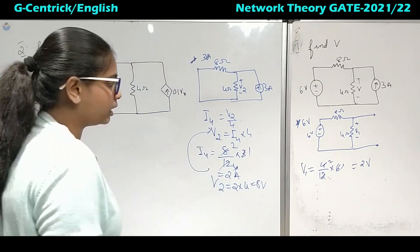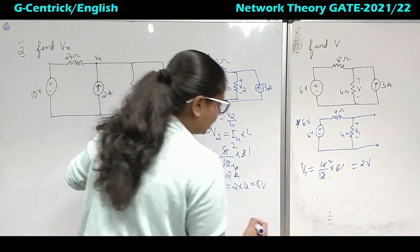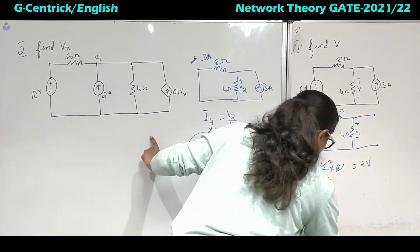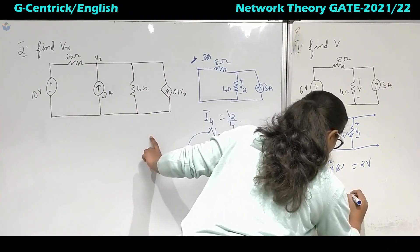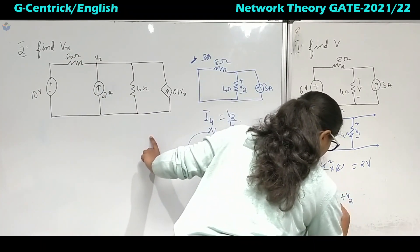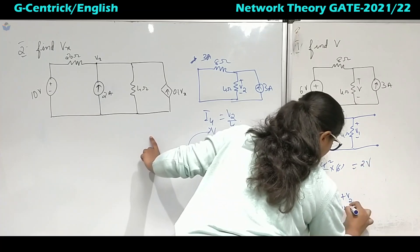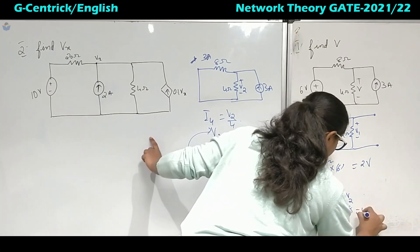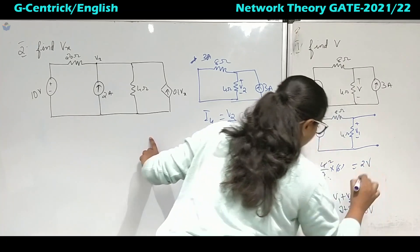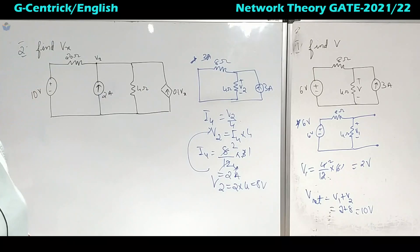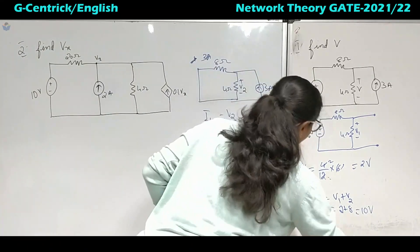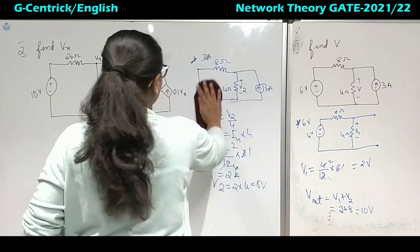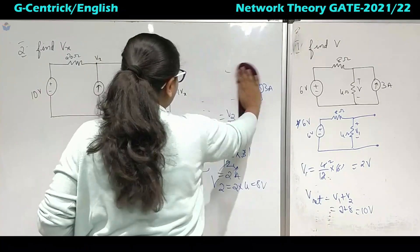Now we calculate V net. There are no more independent sources, so V net = V1 plus V2 = 2 plus 8 = 10 volts. We will verify this same answer using nodal analysis.